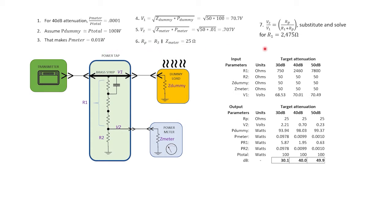Now steps 4 through 7 show the rest of the math. I'm not going to go through it in detail. You can pause the video and study it by yourself if you wish. But essentially it uses Ohm's law, the power equation P equals V squared over R, and the equation for a voltage divider to solve for R1. In this case for 40 dB of attenuation, R1 equals about 2.4K.